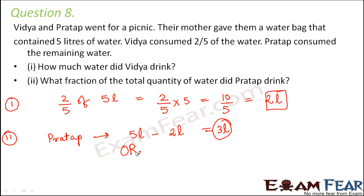So that is one way of doing it. The other way of doing it is if Vidya consumed 2/5 of water that means Pratap consumed how much water? So Pratap consumed 1 minus 2/5. So 1 is the complete water because now we are talking in terms of fraction. So 1 is the total water minus 2/5 which is drunk by Vidya. So in this case this would be 5. So 1 into 5 is 5. So this is 1 into 5 minus 2 into 1. So this is equal to 3/5.